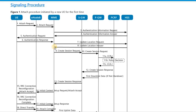Once the MME receives the update location answer message, it initiates the subsequent process of create session request. The messages between the UE and eNodeB have been on the S1 interface, while the messages between the MME and the HSS are exchanged on the Diameter protocol over the S6A interface.